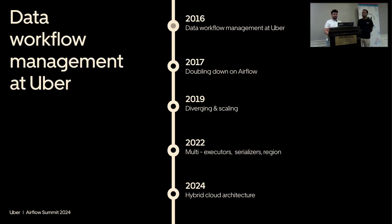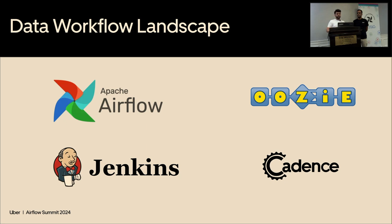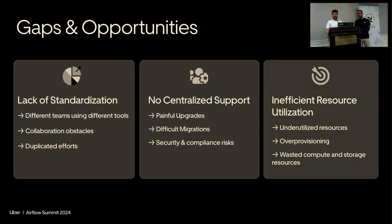For the evolution of Airflow at Uber, let's look at the landscape around 2016. Up until a few years before, each team was doing their own thing in silos — some used Apache Airflow, some used Apache Oozie, Jenkins, Cadence, all their own custom-built solutions. This created a lot of problems: anyone new who wanted to onboard to data workflows needed to figure out which system to set up completely by themselves. There was no standardization and no centralized support, because each team was working in their own silos.